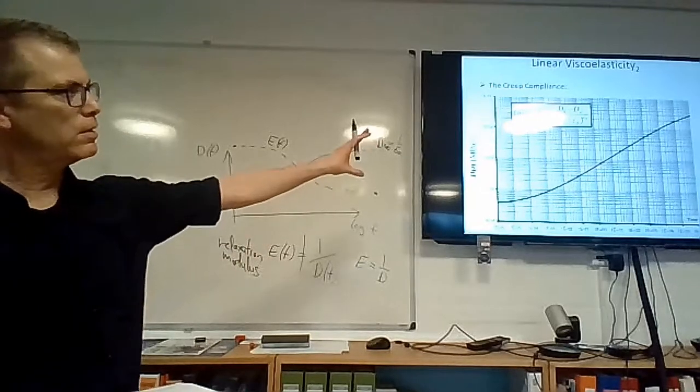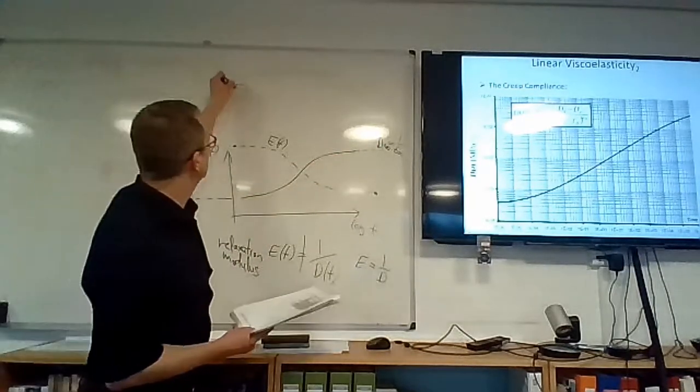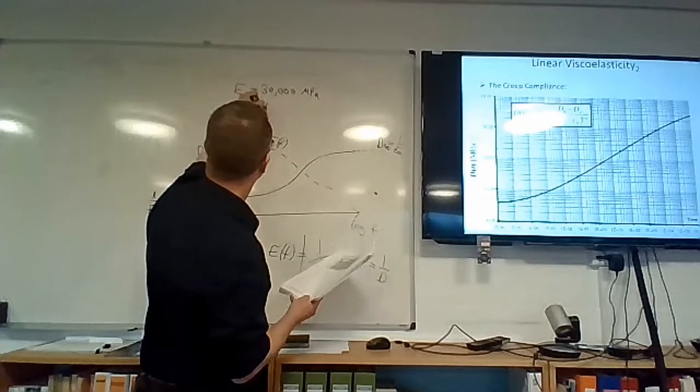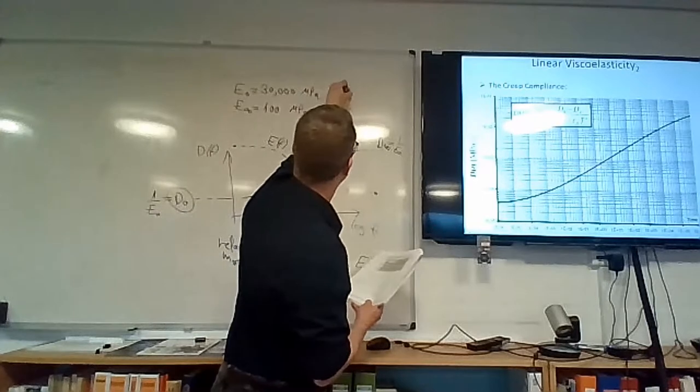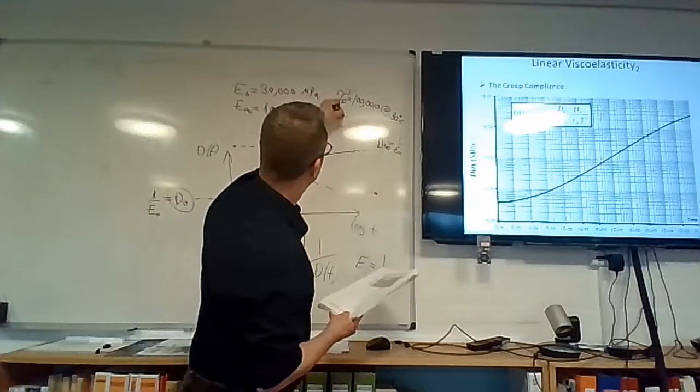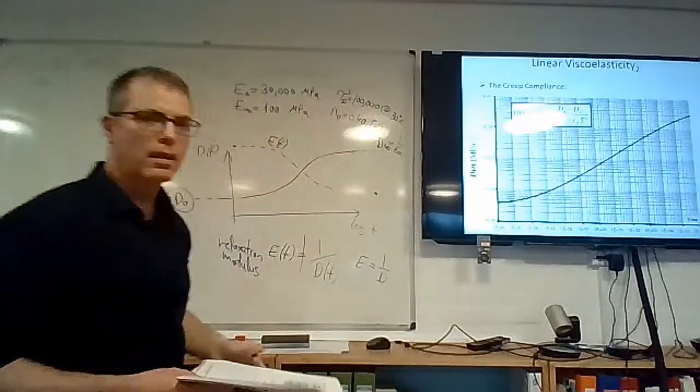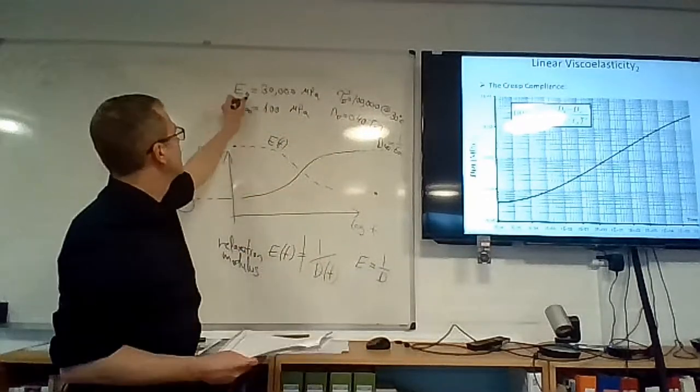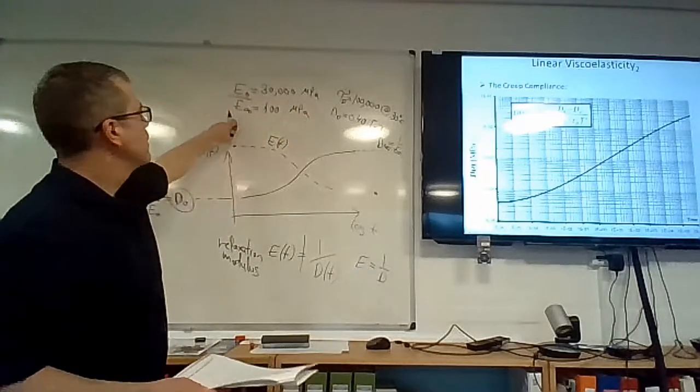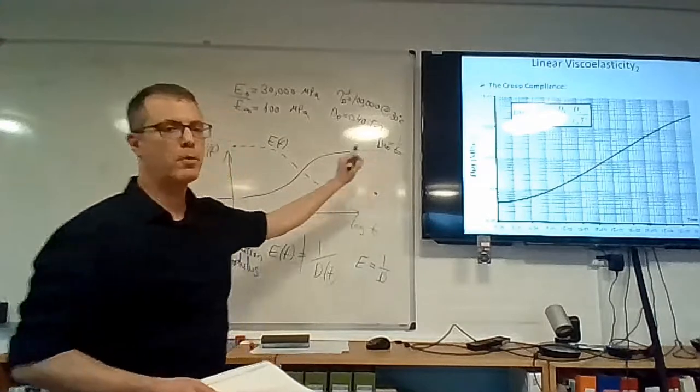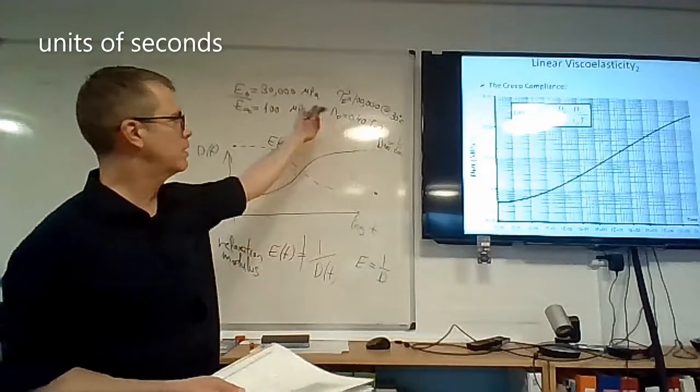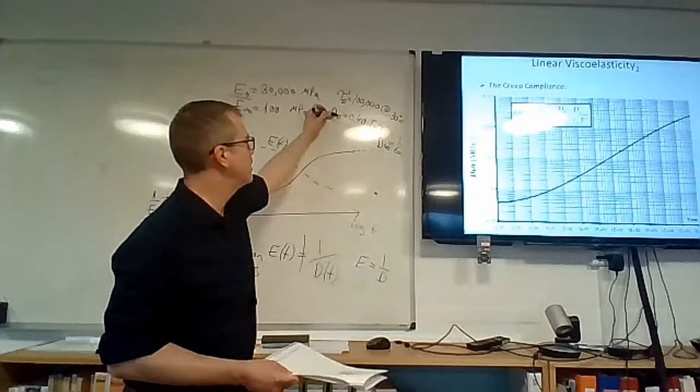If I were to provide you the values here of this creep compliance, these values are specific to this material that was tested. We have E zero, which is the reciprocal of the instantaneous creep compliance, to be equal to 30,000 megapascals. E infinity, reciprocal to the long time creep compliance of 100 megapascals. Tau D is 100,000 and everything here was measured at 30 degrees Celsius. And the power N sub D was 0.4.